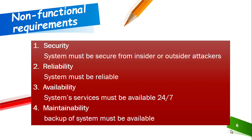The second non-functional requirement is reliability — the system must be reliable. Third is availability: system services must be available 24/7. Fourth is maintainability: a backup of the system must be available. There must be primary storage and secondary storage so that in case of any failure or issue, the backup ensures that data is not lost. These are all the non-functional requirements of the hostel management system: the system must be secure, reliable, available 24/7, and must have a backup.